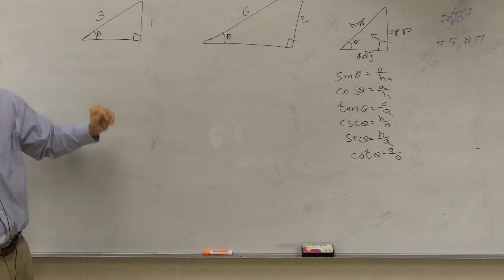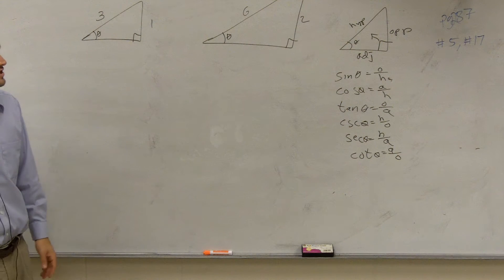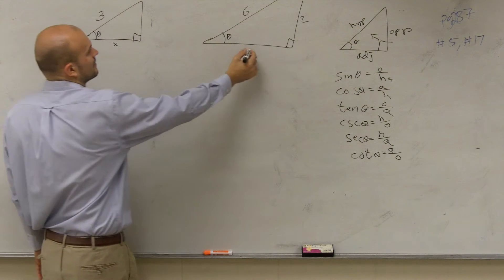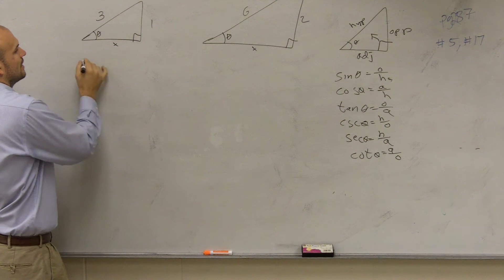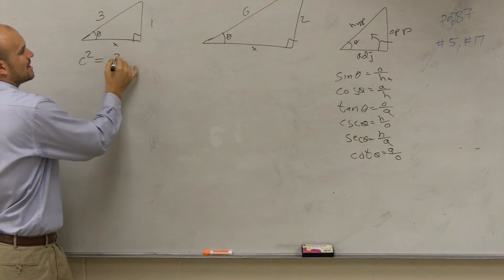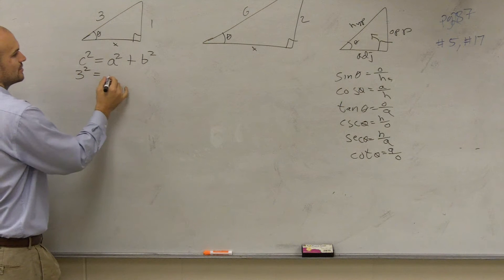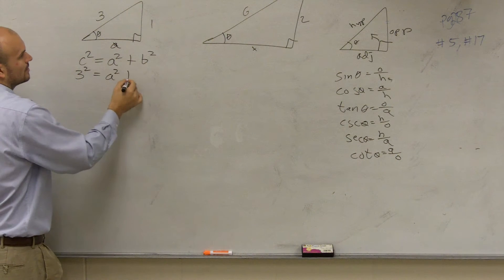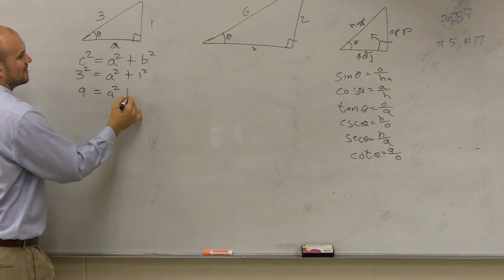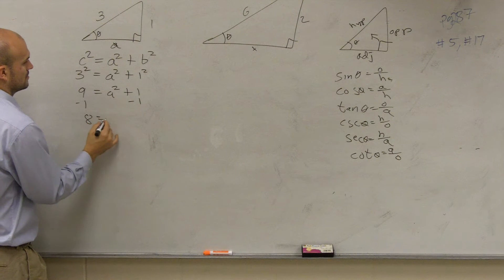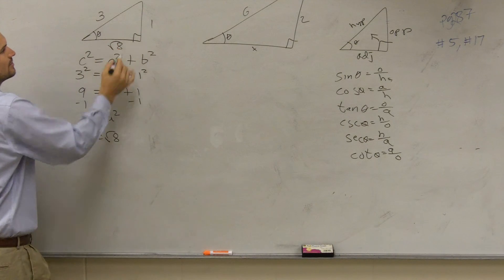As I look at these triangles, they're all written the same. However, I don't know what my adjacent side is. So to find it, I need to use my Pythagorean theorem. I can say hypotenuse squared equals leg squared plus other leg squared. So 3 squared equals a squared plus 1 squared, giving me 9 equals a squared plus 1, so a equals the square root of 8.